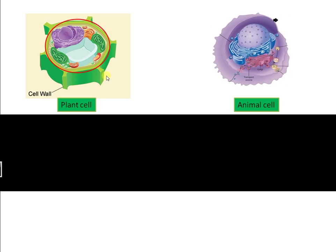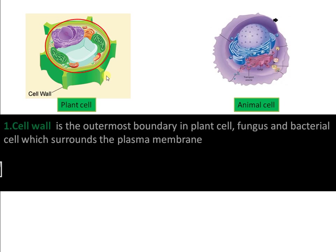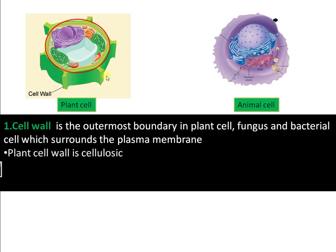Cell wall is present in plant cells, fungal cells, and also in bacteria. The chemical composition may differ in different groups. In plant cells it is made up of cellulose, whereas in fungi it is made up of chitin, whereas peptidoglycan is the composition in the case of bacterial cells.